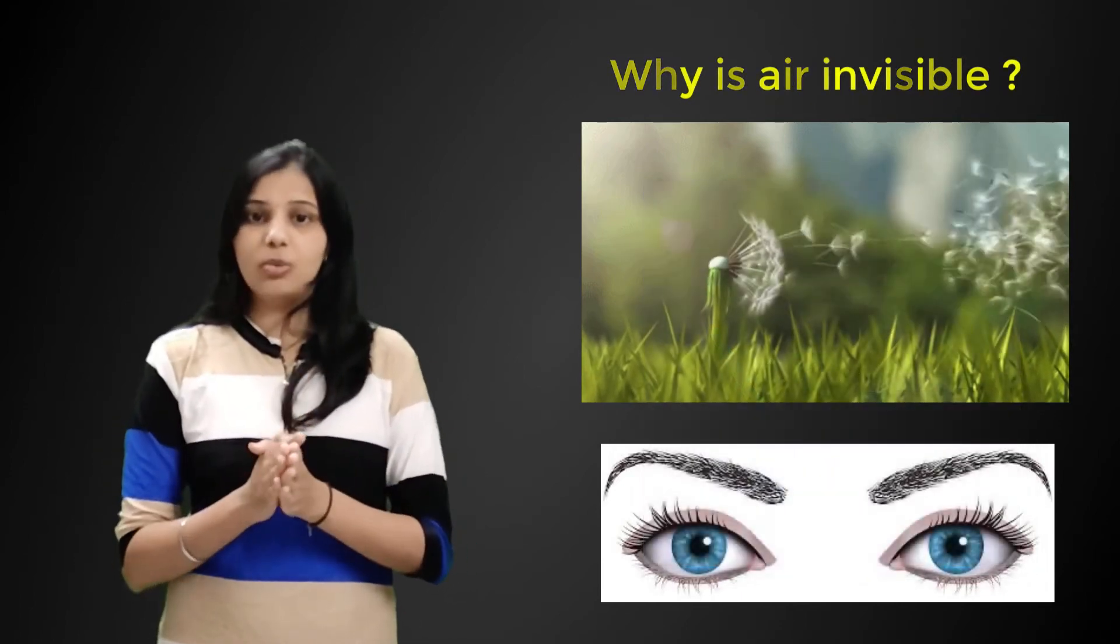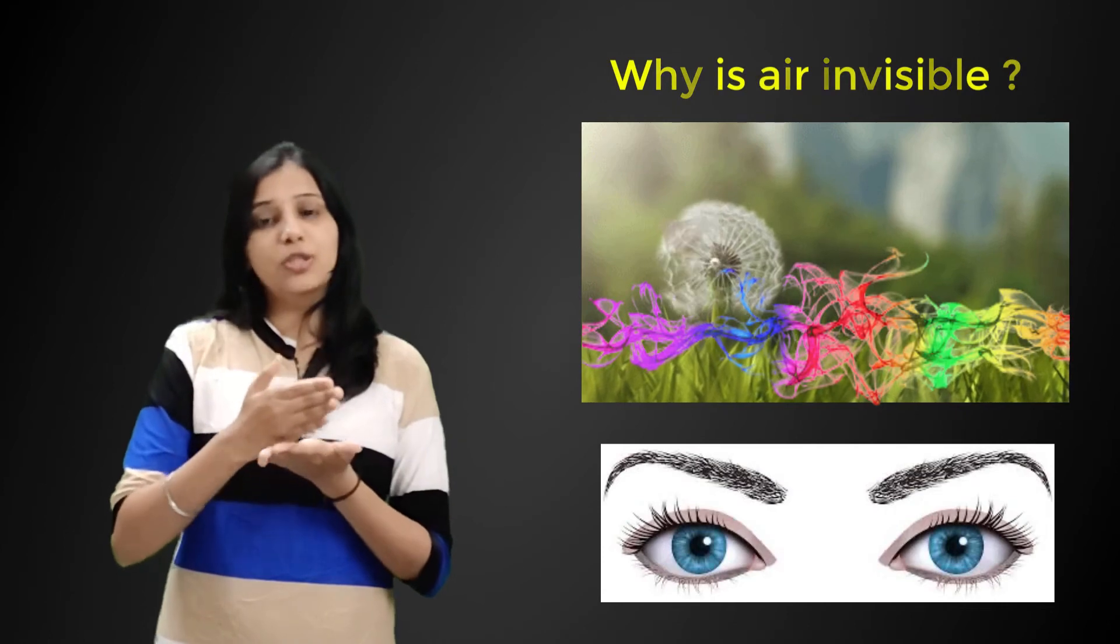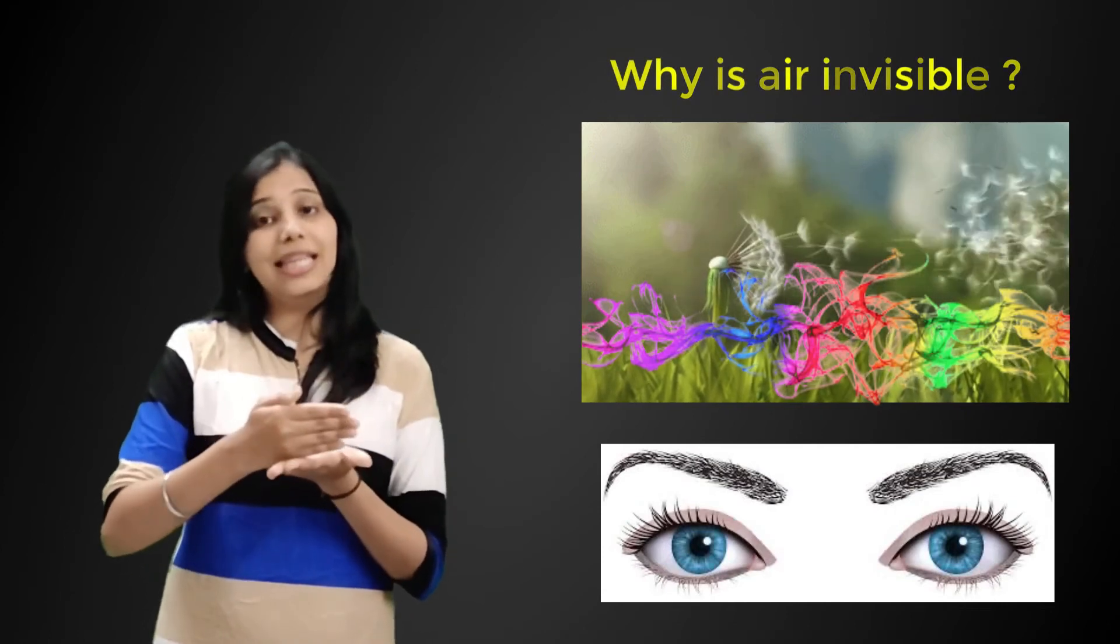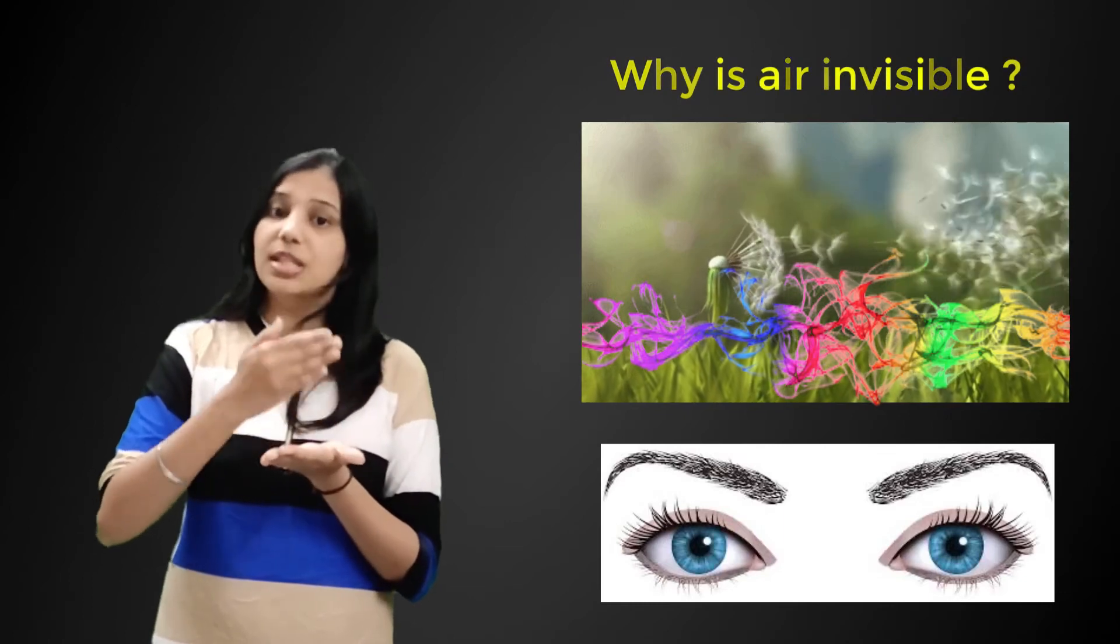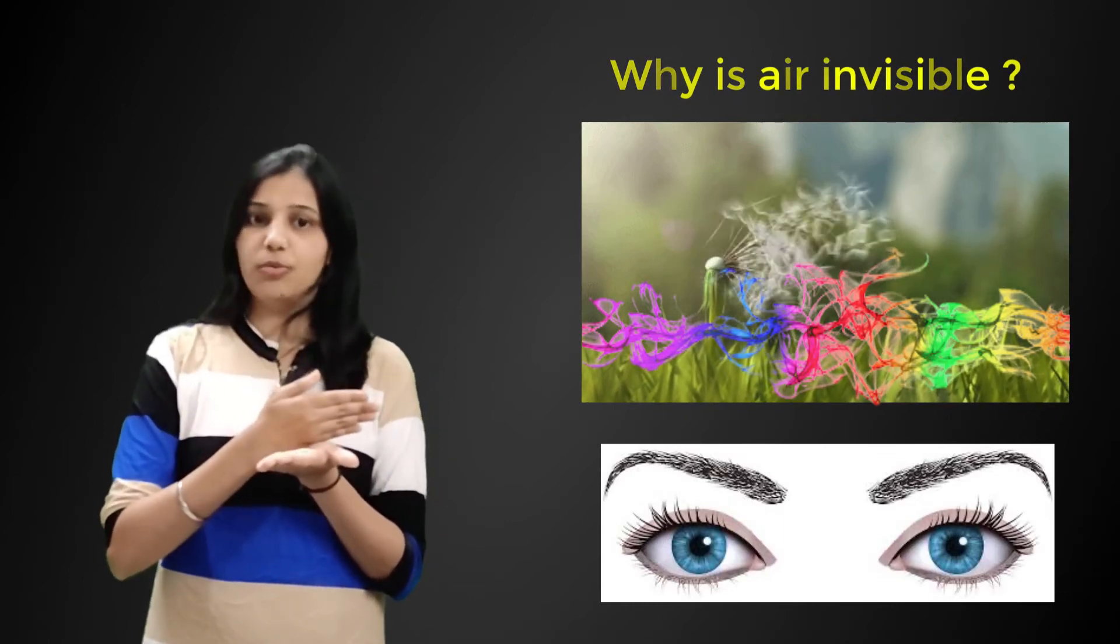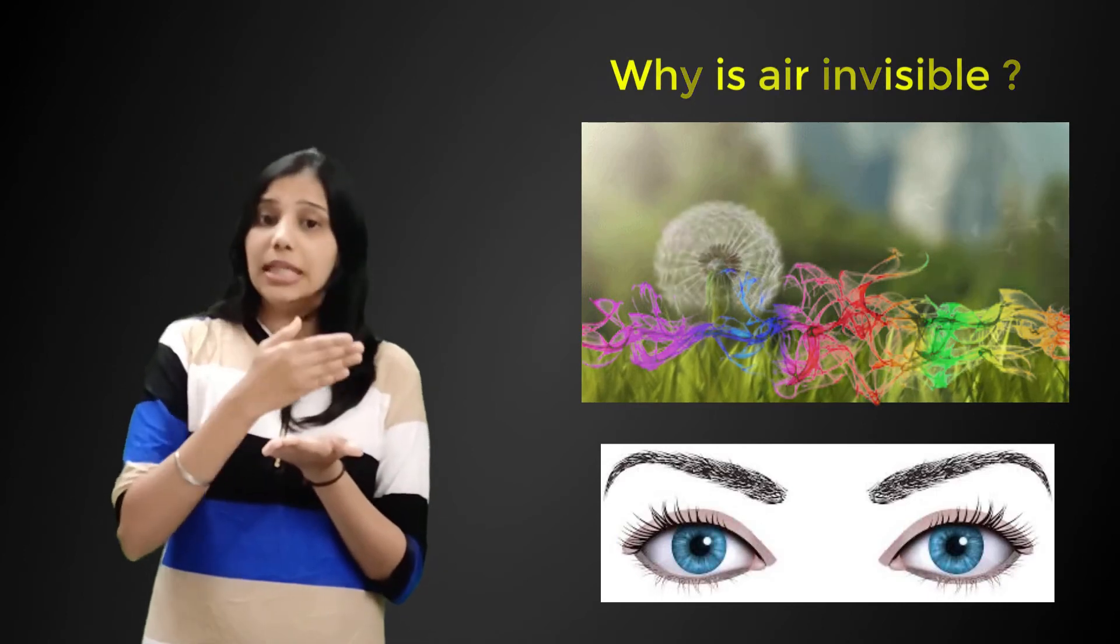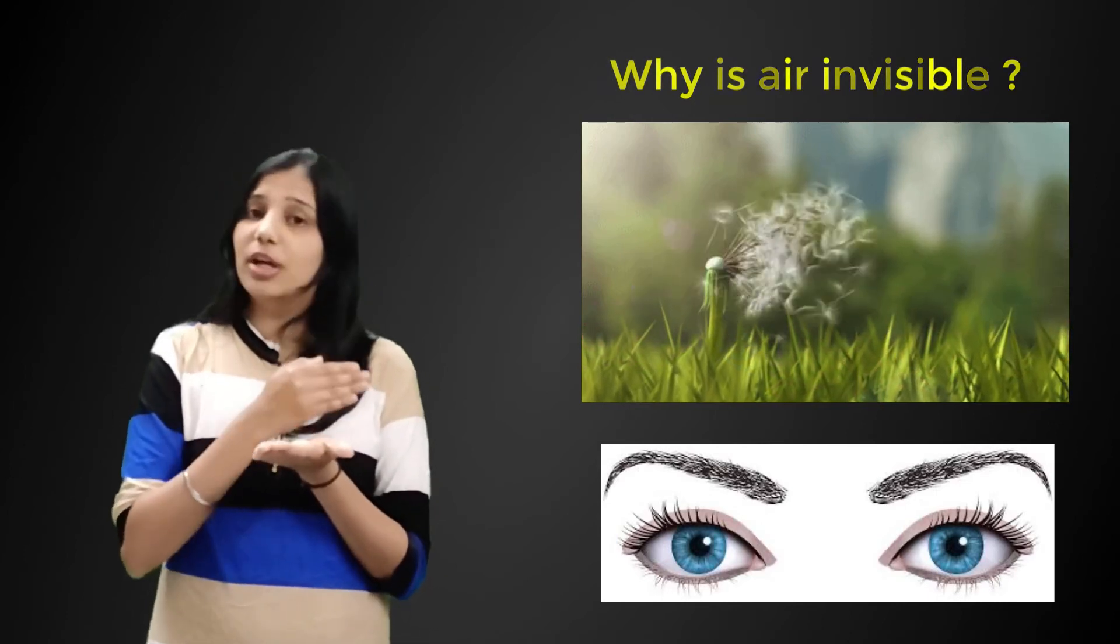For air, it turns out that the colors that are able to be reflected do not lie in that visible range. If humans were capable of seeing those particular reflections, our field of vision would be constantly disrupted by the air in front of us.